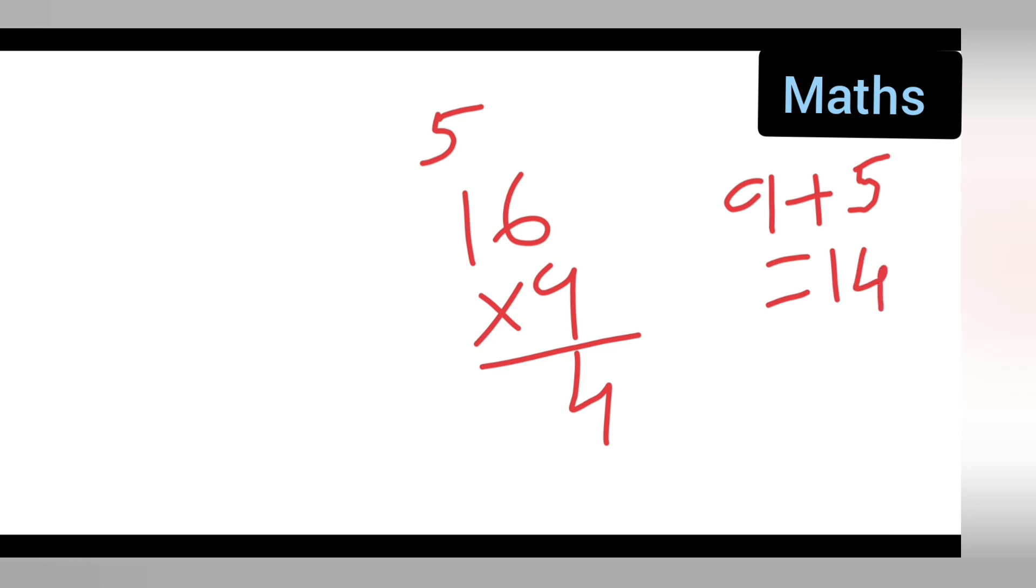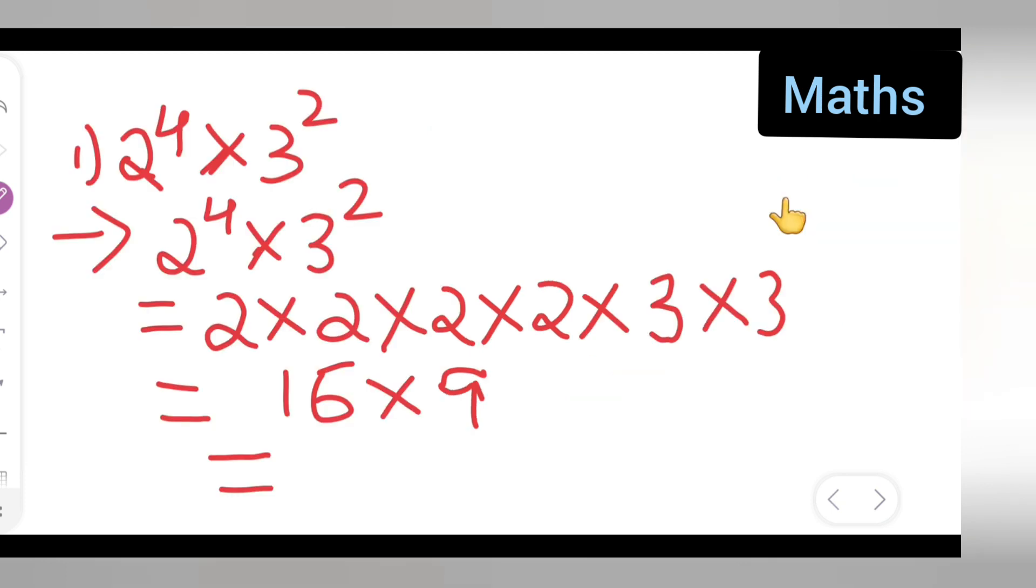So 16 multiplied by 9: 6 nines are 54, right? 9 ones are 9, 9 plus 5 will give you what? 14, right? So here 144 will be your answer. So write down 144.